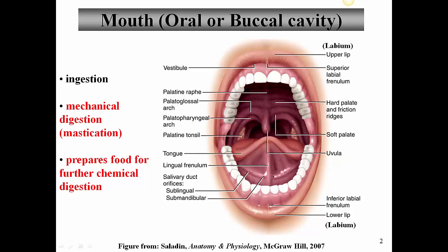Toward the back of the oral cavity you can see a couple of tonsils — these are known as palatine tonsils. We also have one that we can't see because it's behind the uvula, known as a pharyngeal tonsil. At the back of the oral cavity we also see folds of tissue known as fosses. The oropharynx is right back here — all the space at the back of the oral cavity is called the oropharynx.